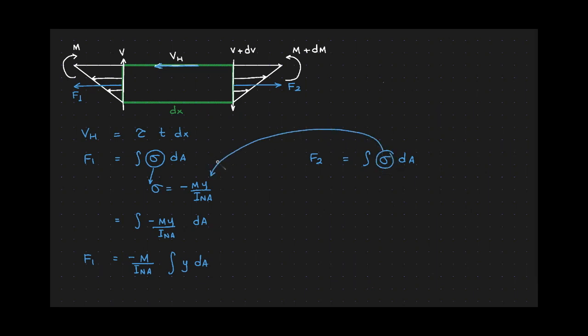going to be replaced with negative m y over i of the neutral axis, but the sigma of the right segment is different than the sigma of the left segment because the moment of the right segment is not m, but it's m plus dm. This is equal to integral, the moment is now of the right segment, m plus dm, y over i of the neutral axis, dA.